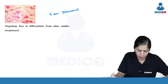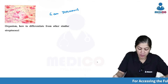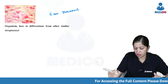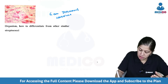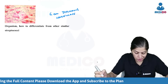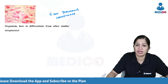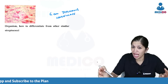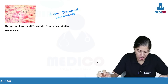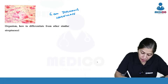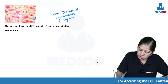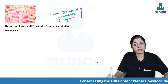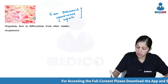Looking more closely at features of this organism, they are lanceolate in shape. Lanceolate diplococci, and at least some of them have a surrounding halo — a small area visible around them — suggesting a capsule. So which organism are we talking about? Gram-positive lanceolate diplococci with a capsule — that is Pneumococci.